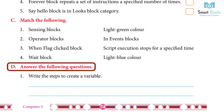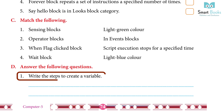Answer the following questions: 1. Write the steps to create a variable. Answer: Click the 'Create a Variable' button in the variable palette if the user wants to create their own variable with a different name. A form will be shown on the screen following the click on the 'Create a Variable' button.